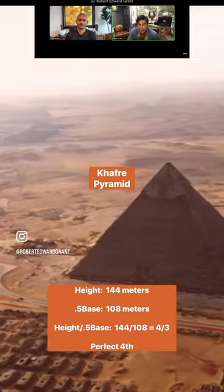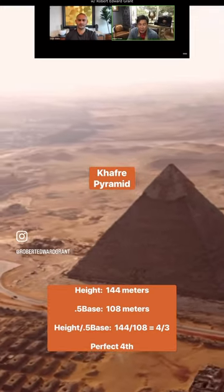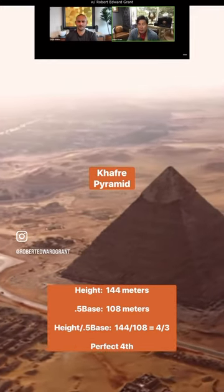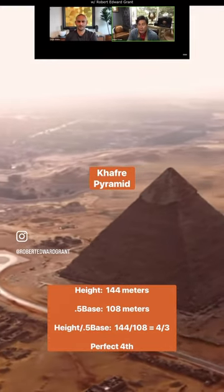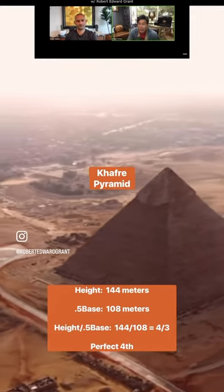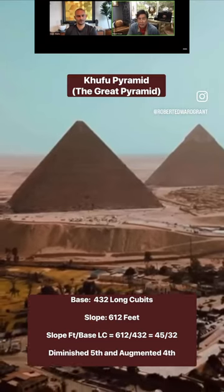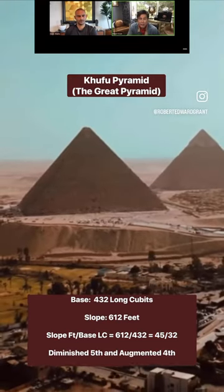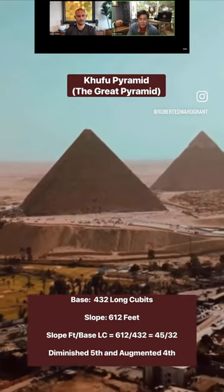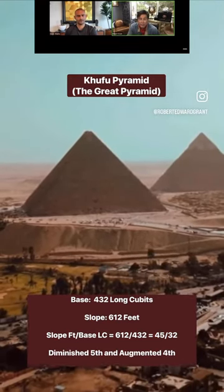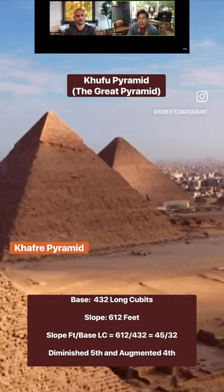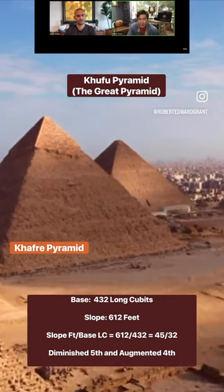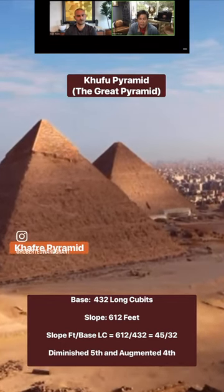The height of the Khafre Pyramid is 4 over 3, which is a perfect fourth. And the relationship of the Great Pyramid is the diminished fifth. The Great Pyramid is actually the imperfect, or the unfinished man — unfinished mankind.